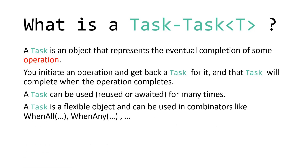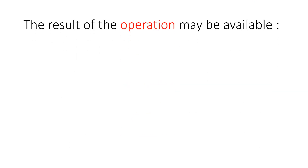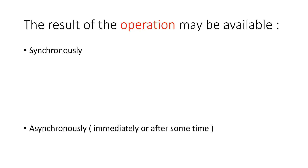A task is a flexible object and can be used in combinators like WhenAll — you can use Task.WhenAll and wait until all tasks are completed. Sometimes tasks will return a result, which is the result of that operation. The result may be available synchronously if it's already in memory, or asynchronously if it's not.